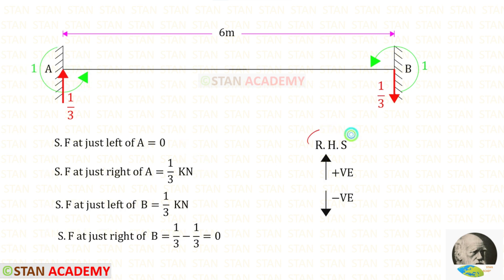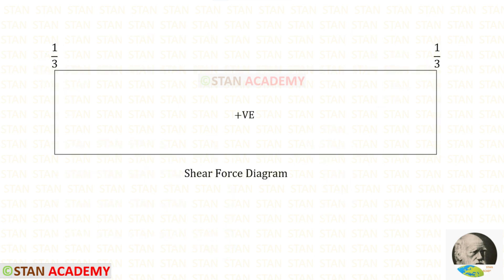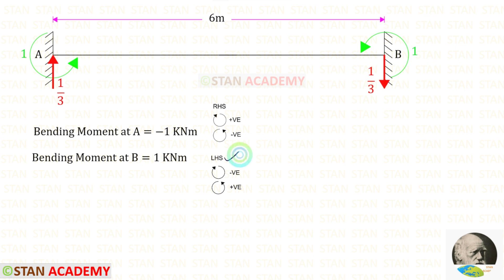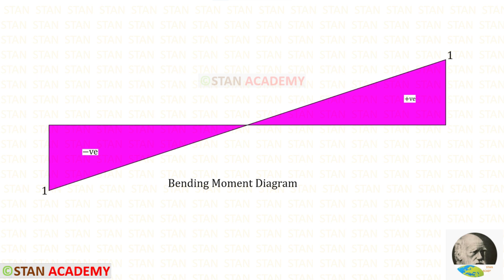Now, using the right-hand side rule, let us find the shear force values. Here you can see the shear force diagram. Now let us find the bending moment at point A using the right-hand side rule. At point A, MA is acting in the anticlockwise direction so it will be negative. Using the left-hand side rule, we find the bending moment at point B. At point B, MB is acting in the anticlockwise direction so it will be positive. Here you can see the bending moment diagram.